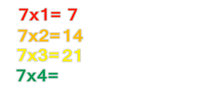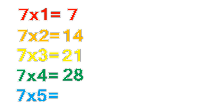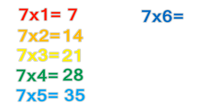7 times 4 equals 28. 7 times 5 equals 35. 7 times 6 equals 42.